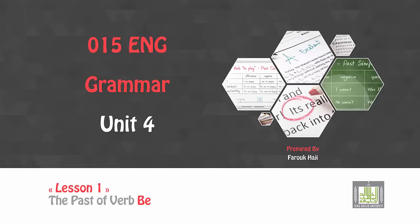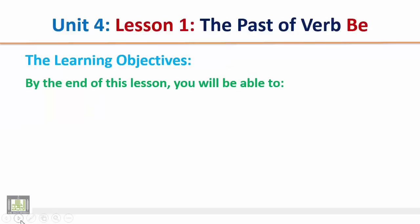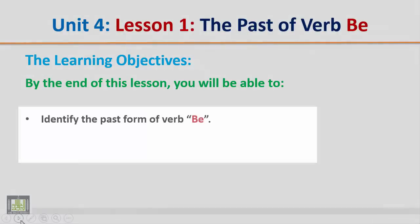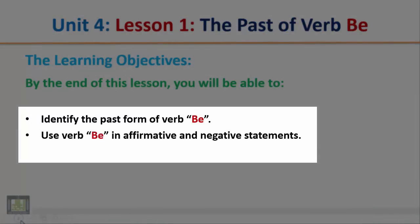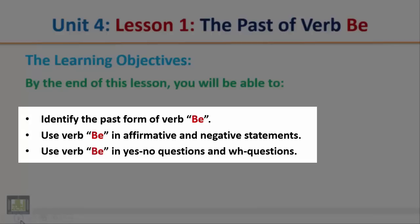Bismillah ar-Rahman ar-Rahim. Grammar Unit 4, Lesson 1: The Past of Verb Be. Learning Objectives: by the end of this lesson, you will be able to identify the past form of verb be, use verb be in affirmative and negative statements, and use verb be in yes/no questions and WH questions.